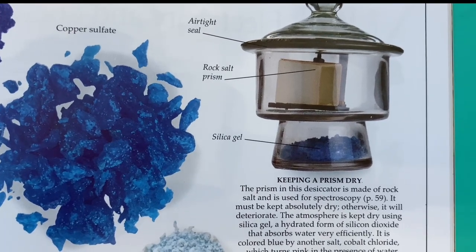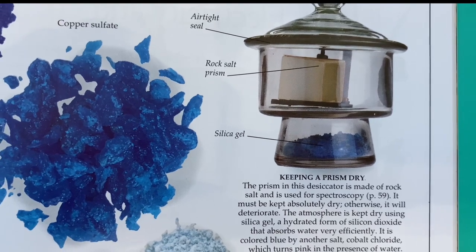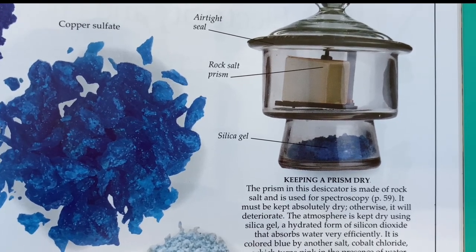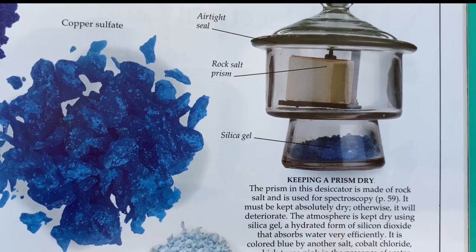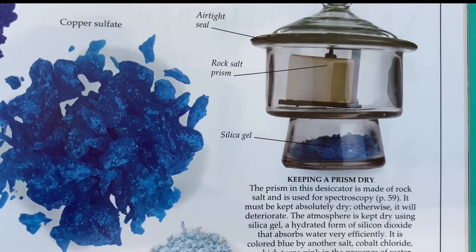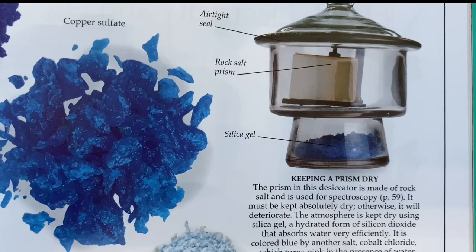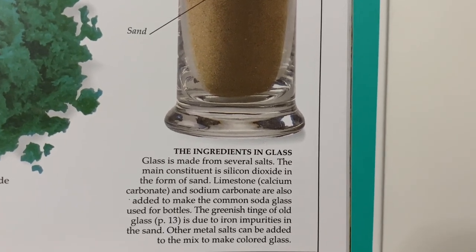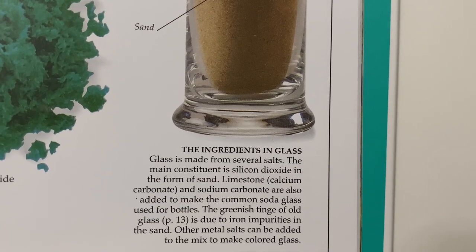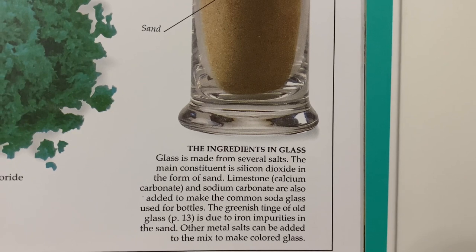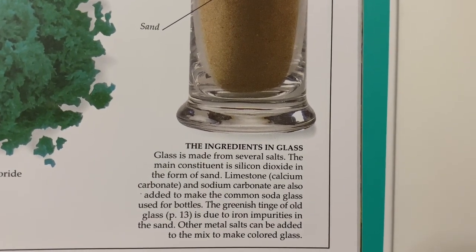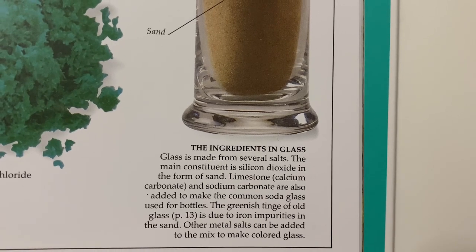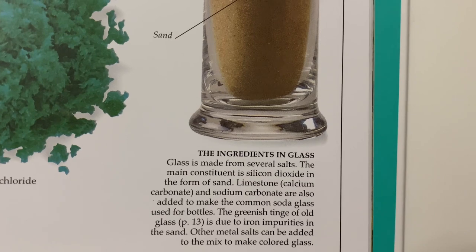The prism in this desiccator is made up of rock salt and is used for spectroscopy. It must be kept absolutely dry, otherwise it will deteriorate. The atmosphere is kept dry using silica gel, a hydrated form of silicon dioxide that absorbs water very efficiently. It is colored blue by another salt, cobalt chloride, which turns pink in the presence of water. Glass is made from several salts — the main constituent is silicon dioxide in the form of sand. Limestone, calcium carbonate, and sodium carbonate are also added to make common soda glass used for bottles. The greenish tinge of old glass is due to iron impurities in the sand; other metal salts can be added to make colored glass.